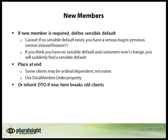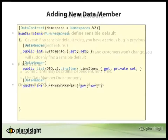If all else fails, you can also inherit the data transformation object if the new item breaks old clients. What this does is let you create a brand new object that accepts both the old version of the object, while the new version is just an inherited item where the differentiation is in how the serialization format appears for the extra new items.